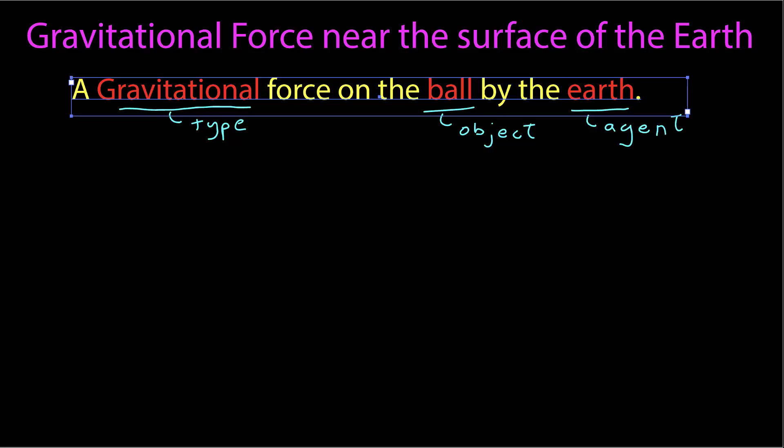I could say there is a gravitational force on the ball by the Earth. The Earth is the agent, the gravitational force is the type of force, and the ball, in this case, would be the object.